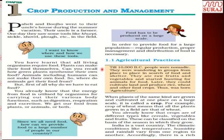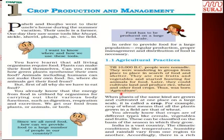Till 10,000 BC, people were nomadic. They grew food here and there, ate raw fruits and vegetables, and hunted animals for food. Slowly they started the cultivation of land and grew rice, wheat, and other crops. In this way, farming and agriculture was born.